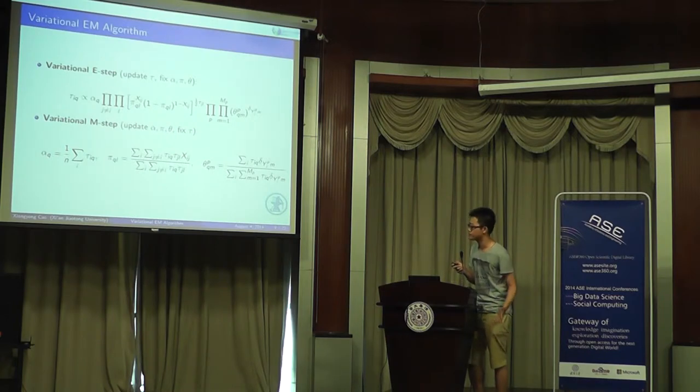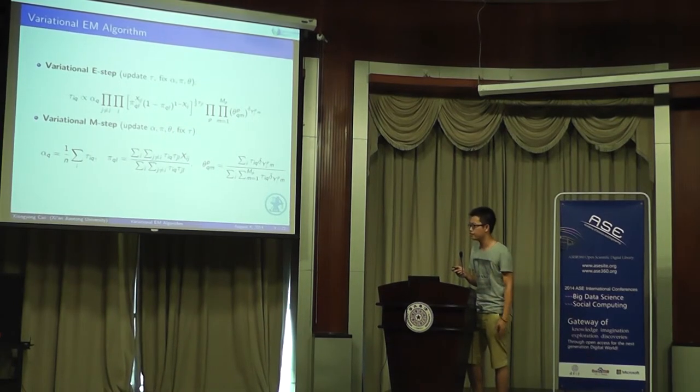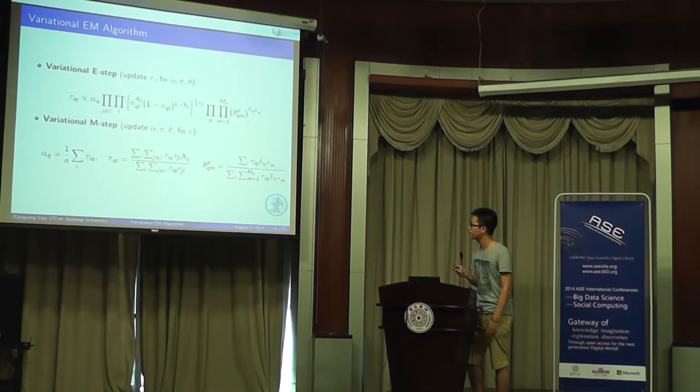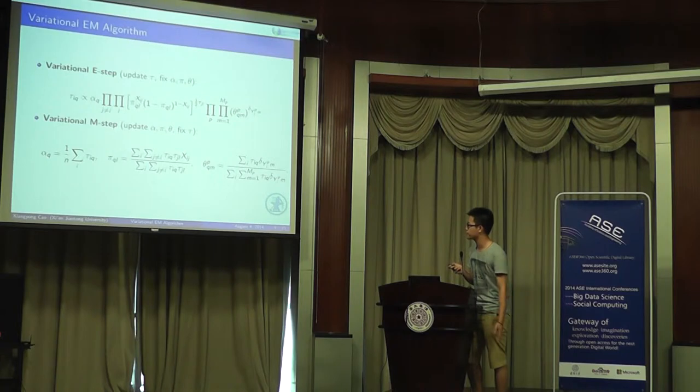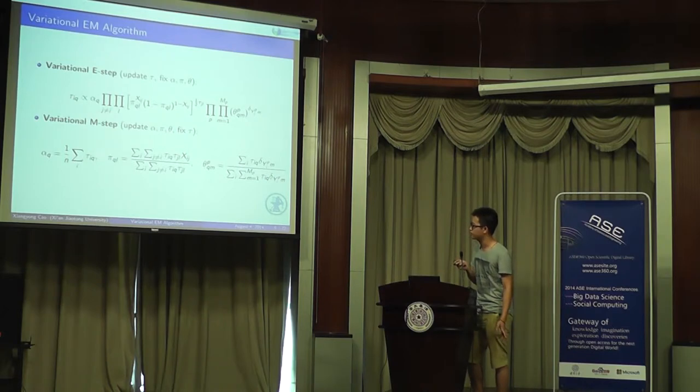First is the E-step. In E-step, we fix the parameters alpha, pi, theta, and update the posterior distribution. Next is the M-step. In M-step, we fix tau and update the posterior distribution for alpha, pi, theta. Then we get these three equations. And then we repeat E-step, M-step until convergence.